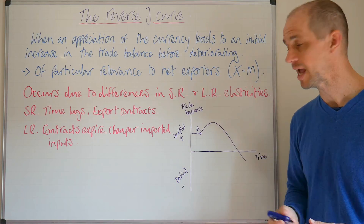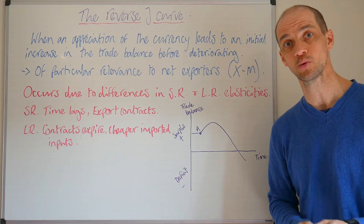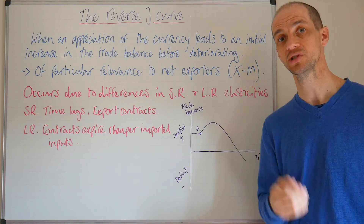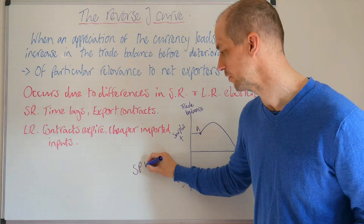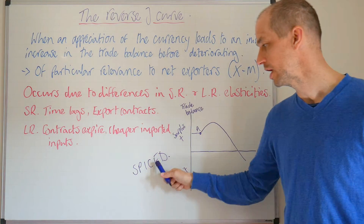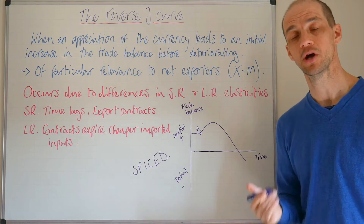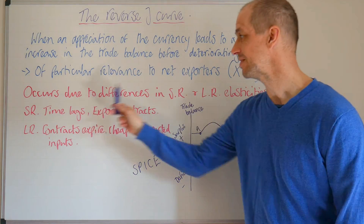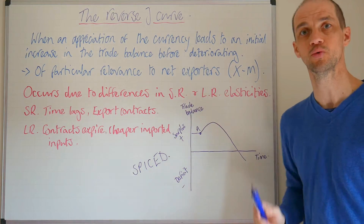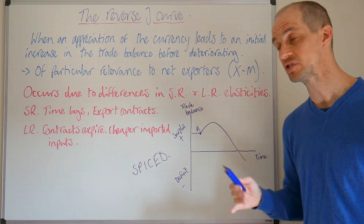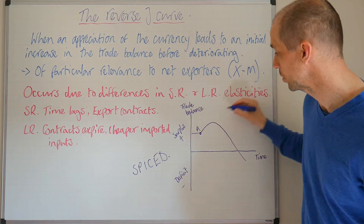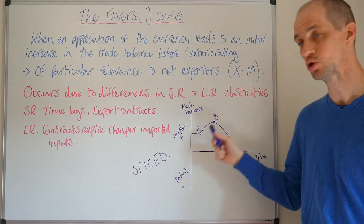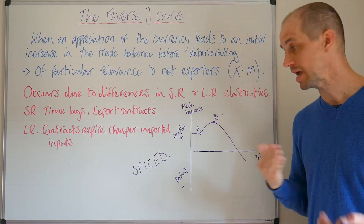We can see that at point A, an appreciation of the currency is carried out. With an appreciation, the currency value goes up and what plays through is that phenomenon: strong pound, imports cheap, exports dear. So exports become dearer and imports become cheaper. Now again, this is going to occur due to differences in the short run and long run elasticities as we've seen with our J curve. We can see from point A through to point B there is that initial short run improvement in the actual trade balance.